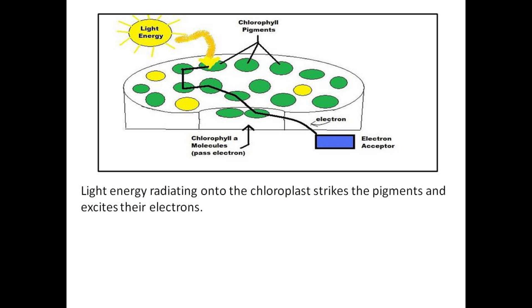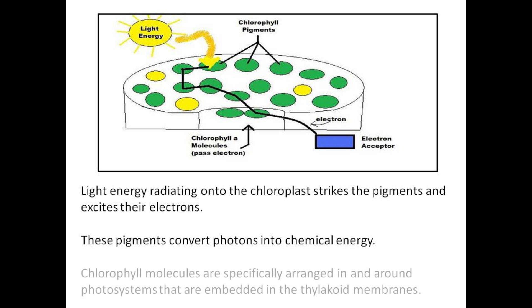Light energy radiating onto the chloroplast strikes the pigments and excites their electrons. These pigments convert photons into chemical energy. Chlorophyll molecules are specifically arranged in and around photosystems that are embedded into thylakoid membranes.